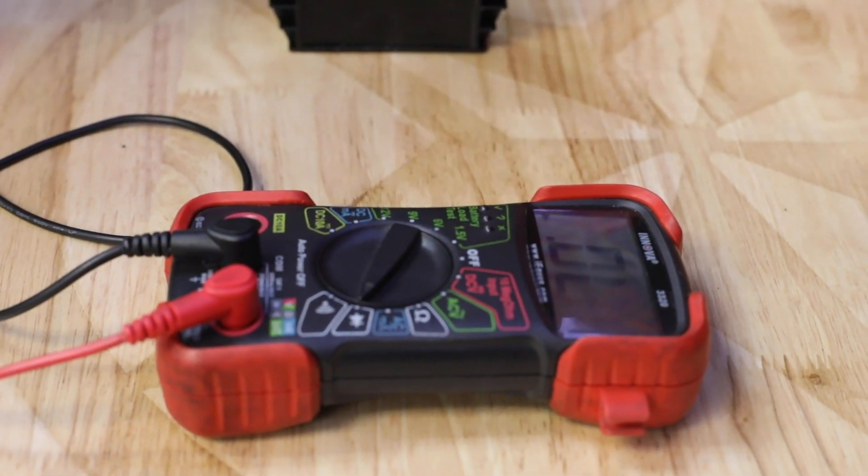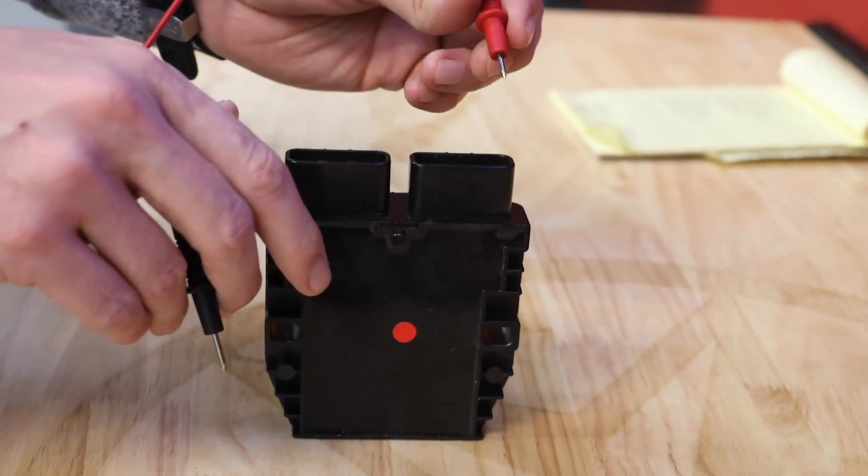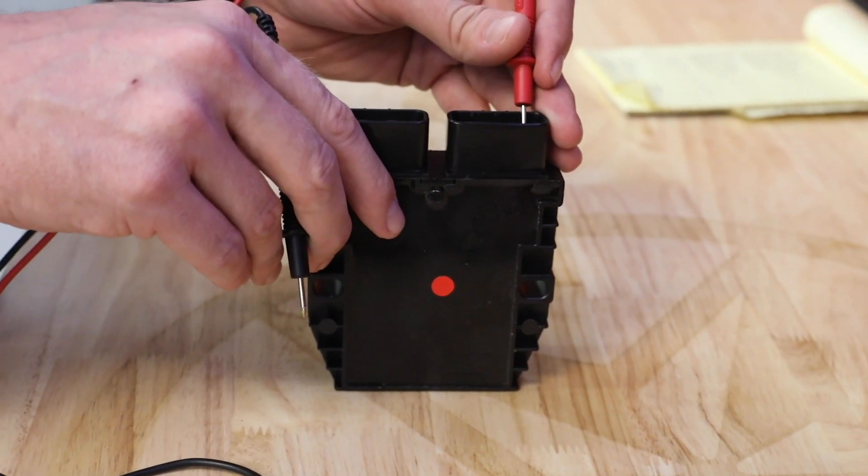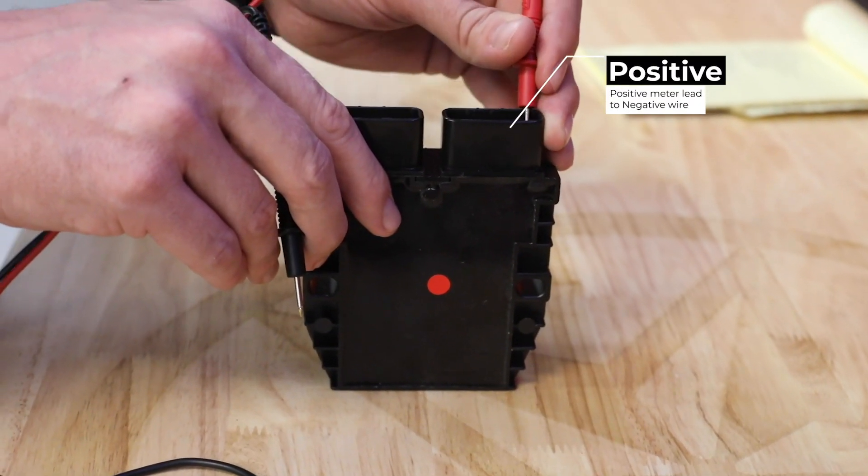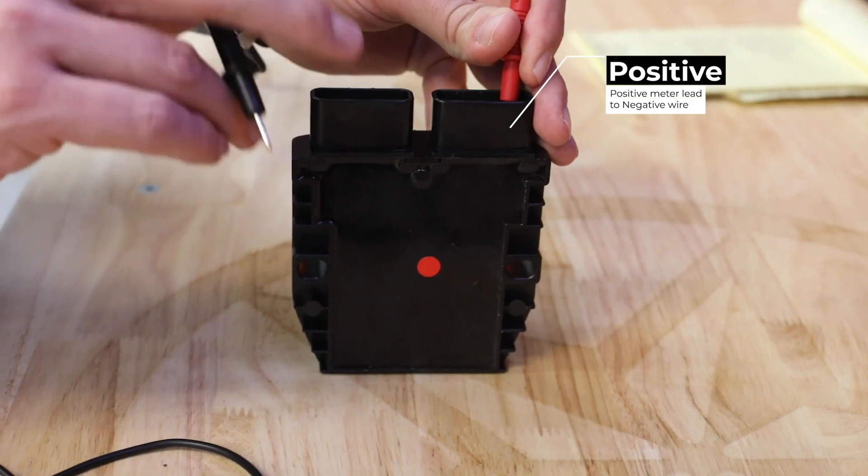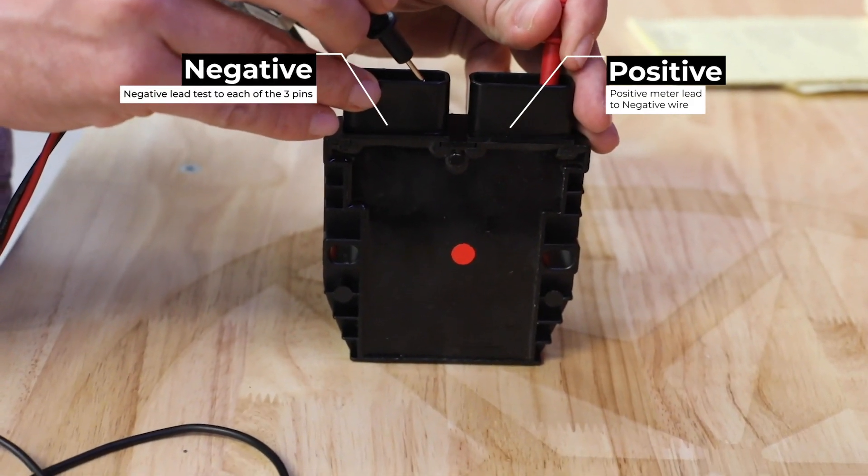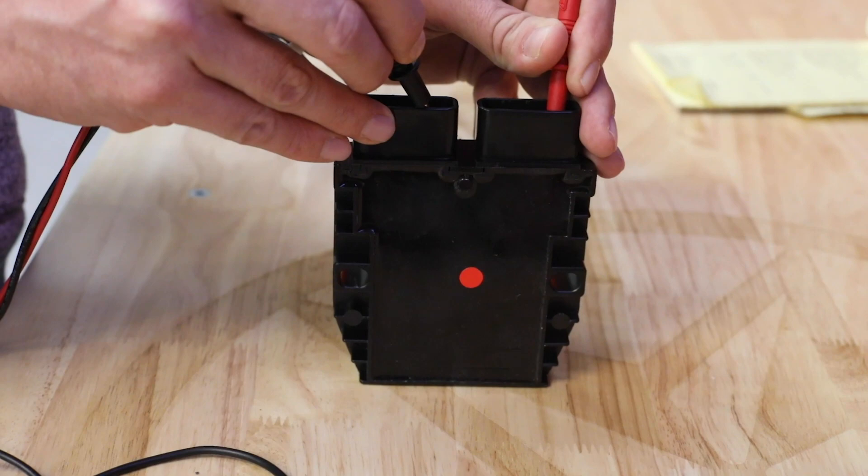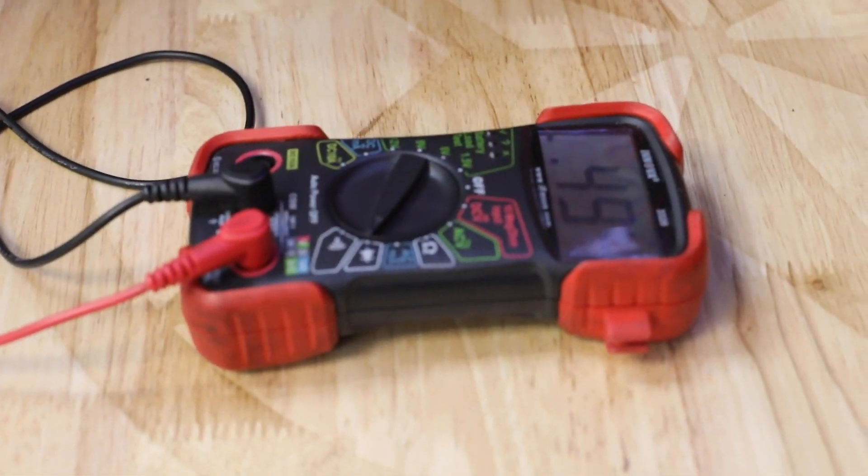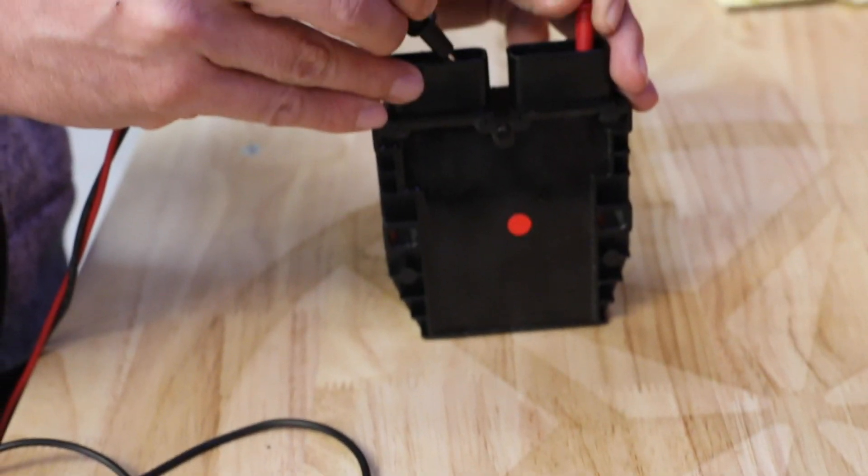Now we're going to go ahead and flip them. Put our positive lead on the negative wire and then again go across all three pins. And here's where we're going to want to read 0.3 to 0.5 volts DC. As you can see there we're still well within that spec.